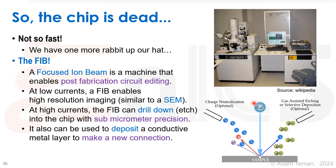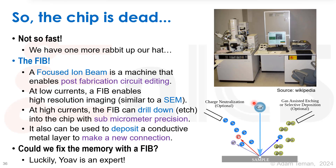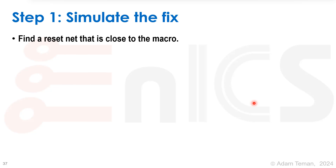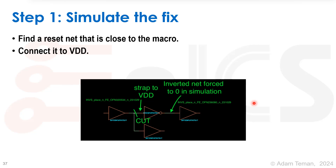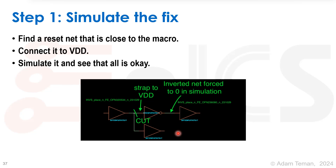A FIB can also deposit a conductive metal layer, so you can actually make a new connection. This is not easy — we have metal layers and all kinds of things all over the place. Luckily we have an expert named Yoav. Step one: simulate the fix. We want to get rid of the reset, and we don't even need it. We need to find a reset net close to the macro and connect it to VDD. We found reset nets in the Verilog of the chip we could tie to VDD, put it into simulation, and confirmed everything works with a fixed memory model.